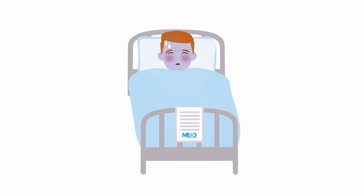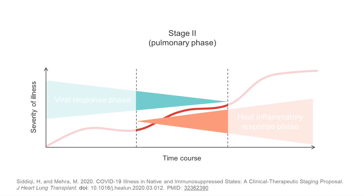It is at this stage where most patients with COVID-19 would need to be hospitalized for close observation, management, and possibly oxygen therapy. This pulmonary stage is divided into two distinct phases: Stage 2a is pneumonia without hypoxia, and Stage 2b is pneumonia with hypoxia, who will likely require hospitalization and oxygen supplementation.